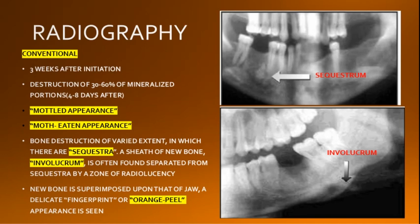In later stages, when the cortex is involved due to ischemia, a portion of cortical bone becomes devitalized. There is gradual resorption around the periphery of the necrosed area and the bone separates — this is called sequestrum. Subperiosteal new bone formation is called involucrum, seen as a fine linear opacity usually present at the lower border. This sheet of new bone called involucrum is often separated from the sequestrum by a zone of radiolucency. In the mandible, where new bone is superimposed upon the jaw, a delicate fingerprint or orange peel appearance is seen.